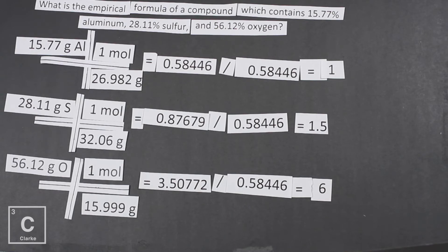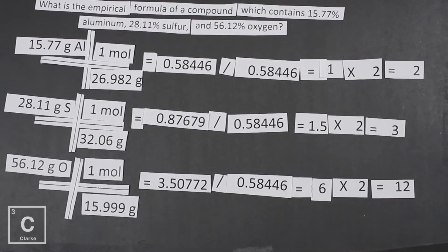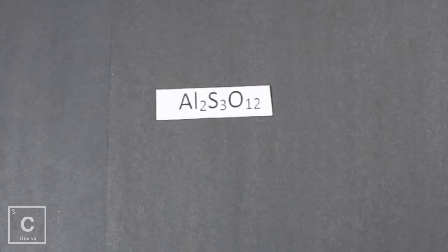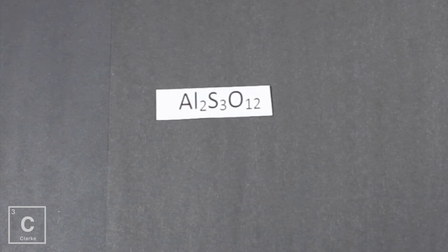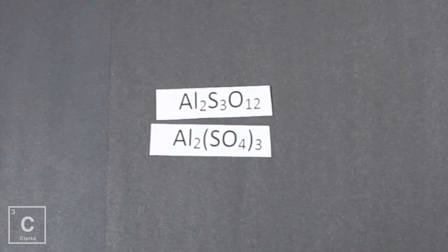We've got to multiply until we get whole numbers. Since 0.5 means a half, multiplying by 2 will give the whole number we're looking for. We end up with 2 aluminum, 3 sulfur, 12 oxygen. That looks a little weird, but that's because the sulfur and oxygen form a polyatomic ion. So we have two aluminum and three sulfates — Al2(SO4)3.